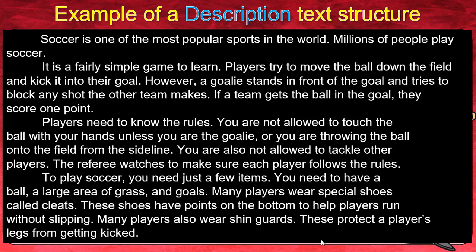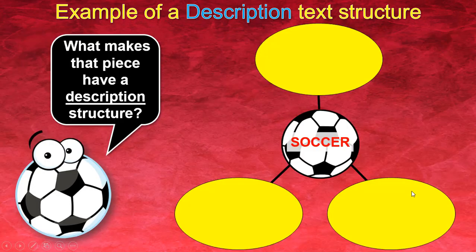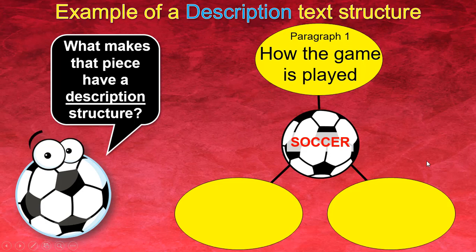To play soccer, you need just a few items: a ball, a large area of grass, and goals. Many players wear special shoes called cleats — these shoes have points on the bottom to help players run without slipping. Each player also wears shin guards, which protect players' legs from getting kicked. So, what makes this piece have a descriptive structure? In paragraph 1, it's describing how the game is played — soccer is the topic, and paragraph 1 describes how soccer is played.